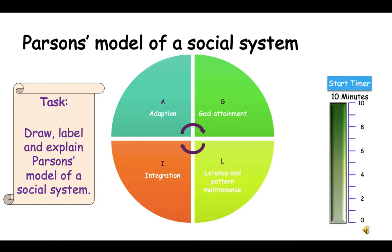Parsons' model of a social system: your task is to draw, label, and explain Parsons' model of a social system. Go on to Google Classroom and BBC Bitesize, which has been helpful to some of you, and explain what adaptation, goal attainment, latency and pattern maintenance, and integration mean, and why they are all interlinked.